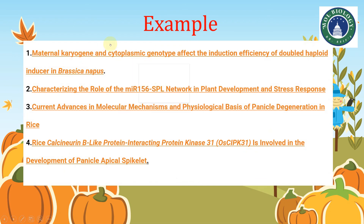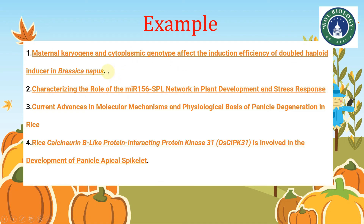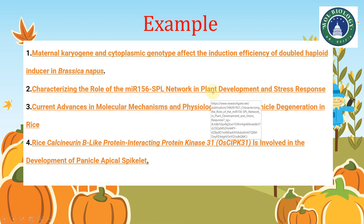Here are a few examples of good titles. The first one is: 'Maternal karyogene and cytoplasmic genotype affect the induction efficiency of doubled haploids in Brassica.' This title is very good — it gives complete information, it is concise, it does not mention 'study of' or 'finding of,' and it already gives a conclusion that both maternal karyogene and cytoplasmic gene affect the induction efficiency. Another example is: 'Characterizing the role of miR156 in plant development and stress response.' These two titles belong to review papers.